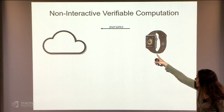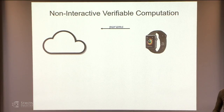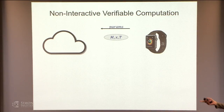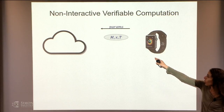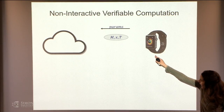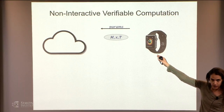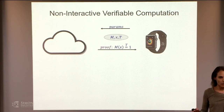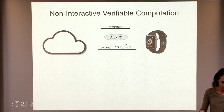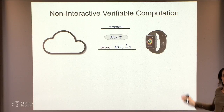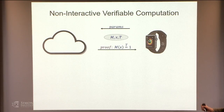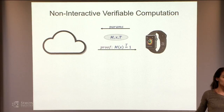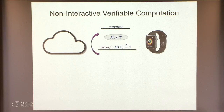So what is verifiable computation in the non-interactive setting? There's a very weak device — not only classical, he's really weak, he can run only in a very short amount of time. There is a cloud that's powerful — that's your prover. The powerful prover is going to prove correctness of computations to this weak device. We want the proofs to be just certificates, non-interactive. The weak device, once and for all, sends some short public parameters to the cloud.